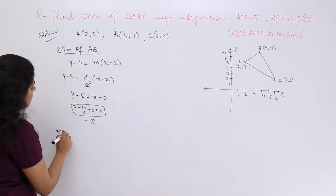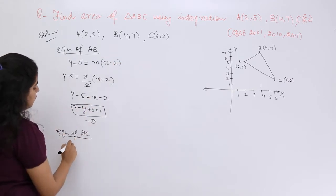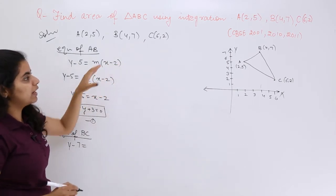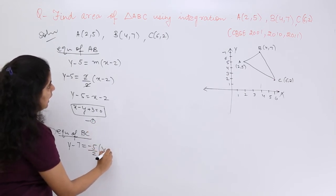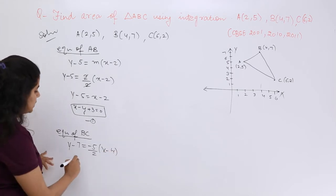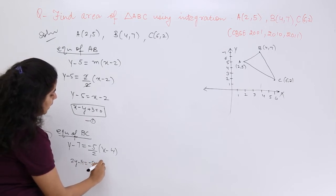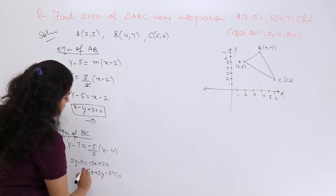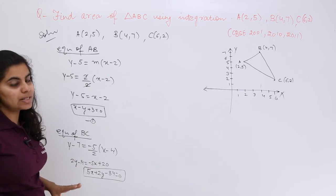Let me find out the next equation, equation of BC. BC is again y - y₁ = m(x - x₁). The slope m is -5/2 times (x - x₁). Now let me solve it: 2y - 14 = -5x + 20, or in short it should be 5x + 2y - 34 = 0.